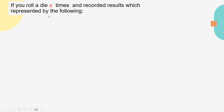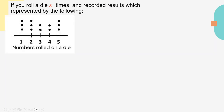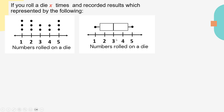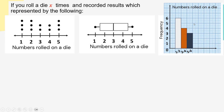If you roll a die x times and record the result, it is represented by the following graphs. Here we have the dot plot, and for the same data we represent it by box plot, and for the same data we represent it again by histogram.